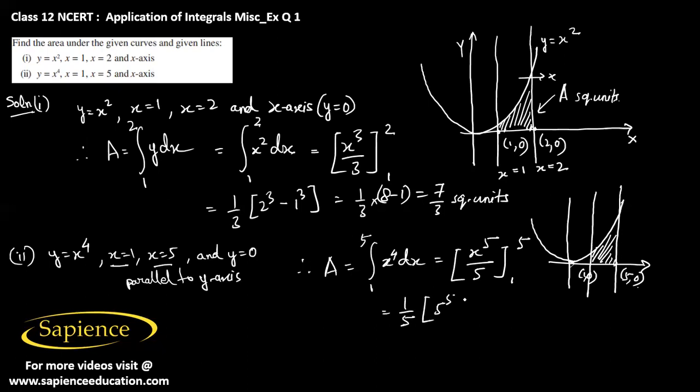Integral 5 power 5 minus 1 power 5. So that would be equal to 5 power 5. So that would be approximately 5 cube is 125 and 5 square is 25, then minus 1, that divided by 5.